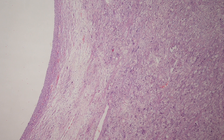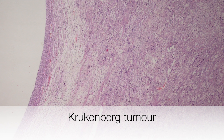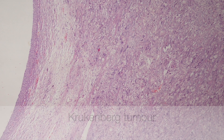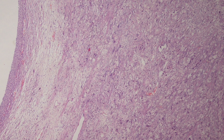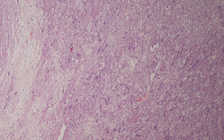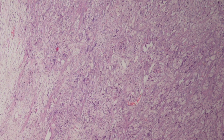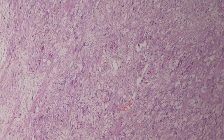This is a low power view of a Krukenberg tumour. On the left is part of a cystic follicle, and to the right of this the ovarian stroma is diffusely infiltrated by signet ring cells.